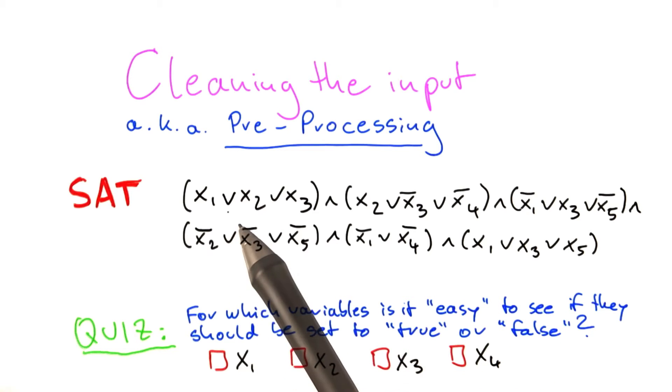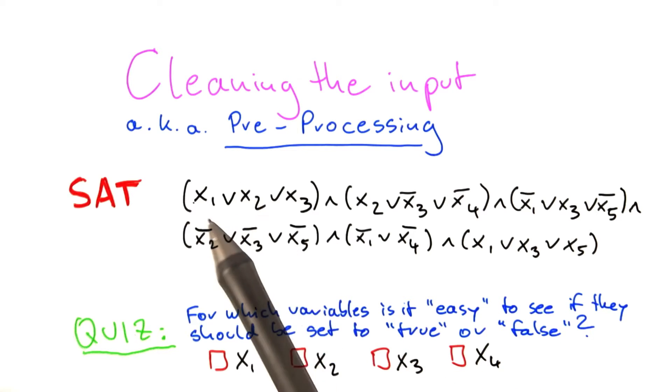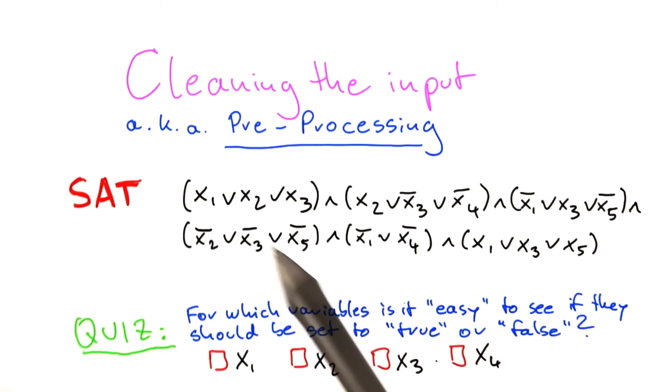And also each variable appears at least once. So x1 appears 1, 2, 3, 4 times, x2 1, 2, 3 times, and so on. So each variable appears at least twice.